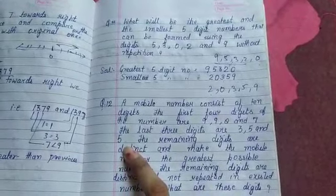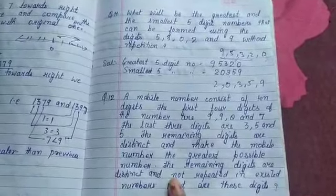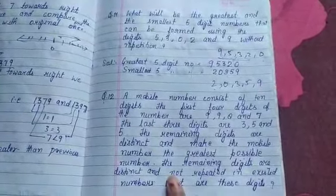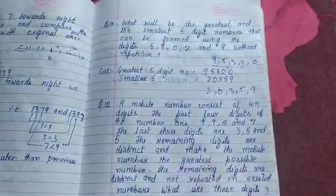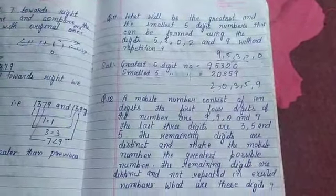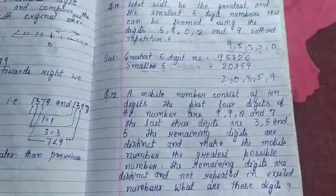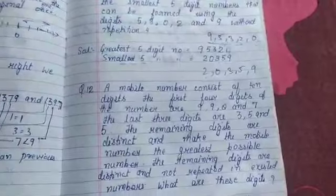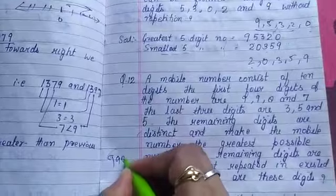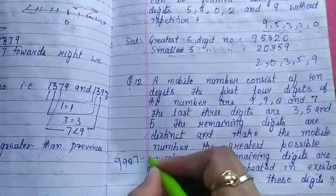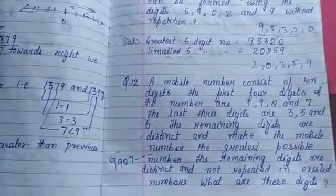We have to fill the 3 middle digits which are distinct — meaning different from each other — and we have to form these mobile numbers in the greatest form. So the starting digits 9, 9, 8, 7 are given, the 3 middle digits are not given, and the last 3 digits 3, 5, 5 are given.